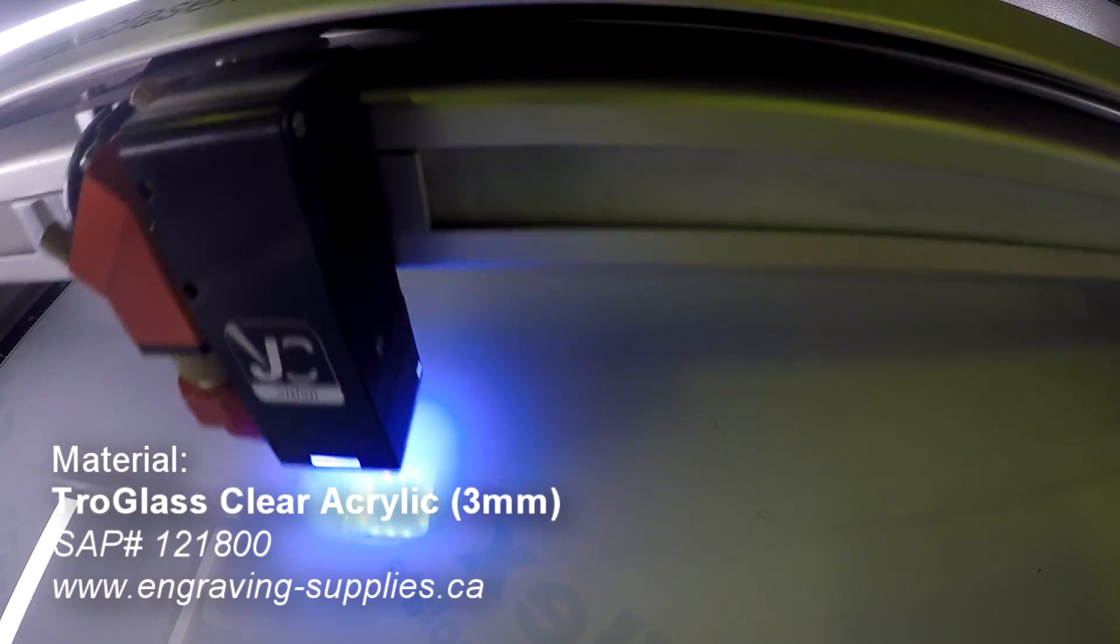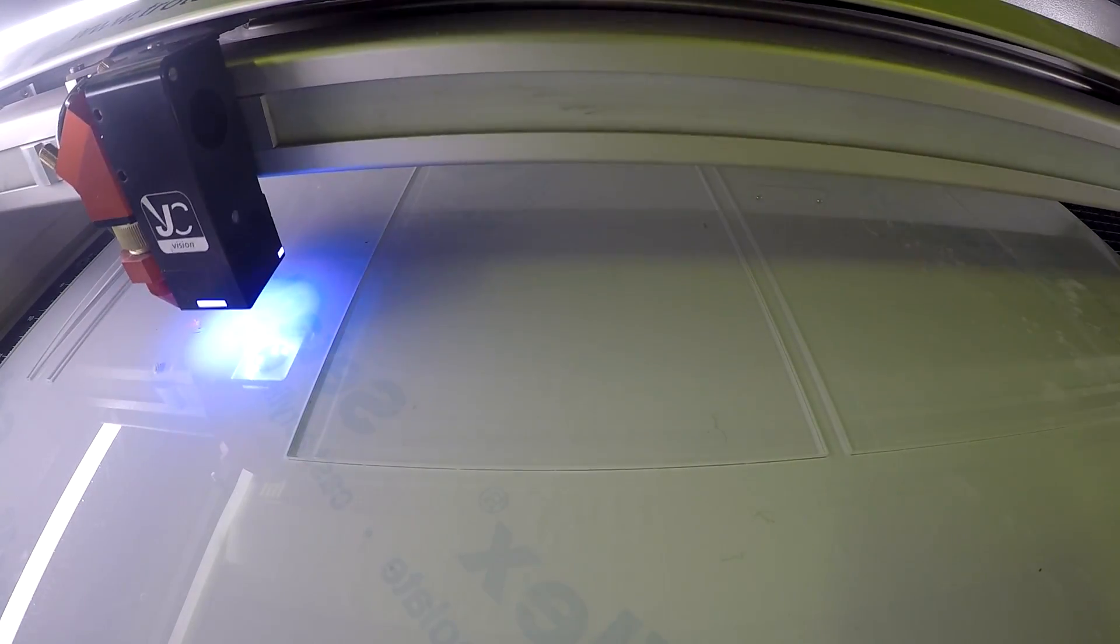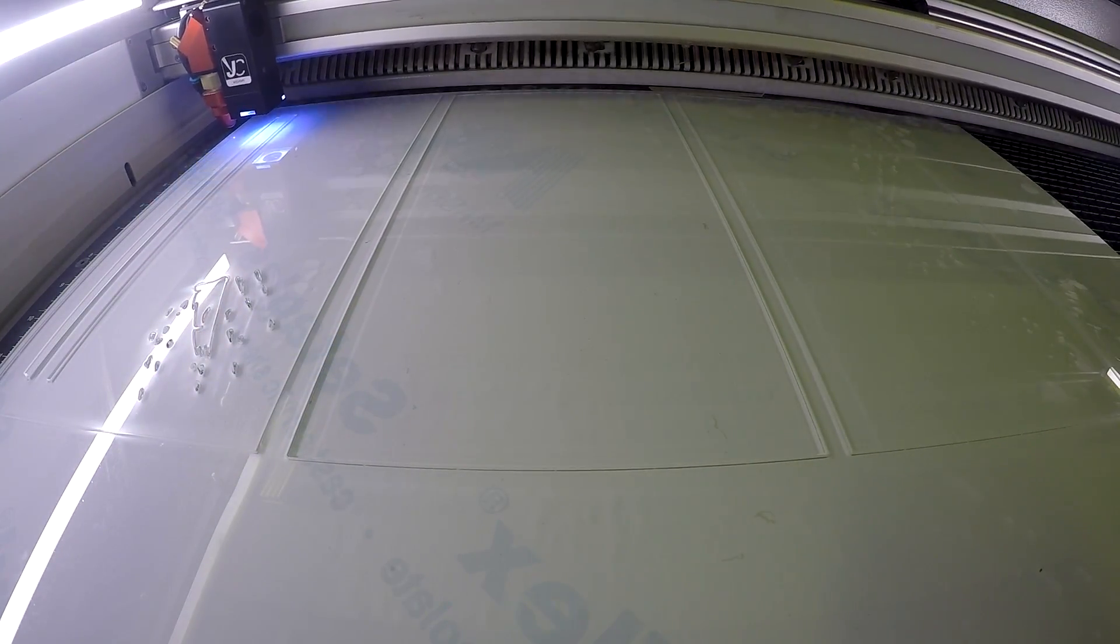I'm using three sheets of TroGlass three millimeter acrylic. The front layer is the main engraving of the boxer. The second layer is the secondary engraving of the motion of the hand. The back layer is inlaid acrylic.